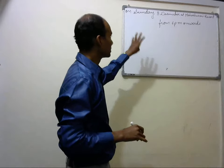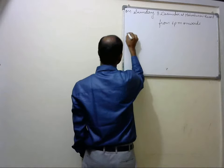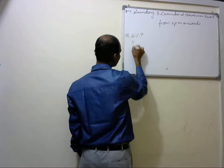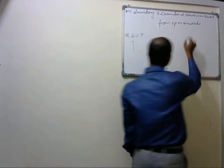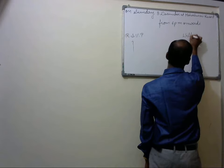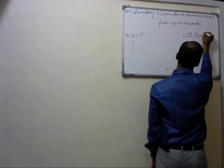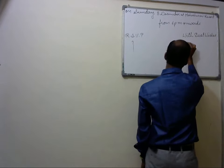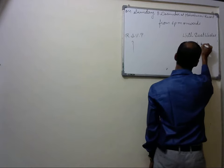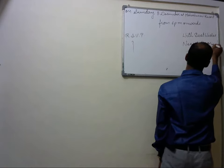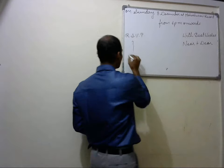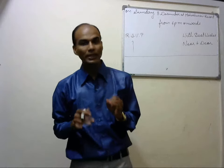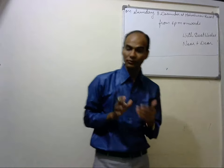So this completes the language. Now here we write RSVP, then the name and the address. And on the right side write 'with best wishes.' Below this write 'near and dear.' The whole thing must be put in a box. So by writing this, you get four out of four marks. You don't have to write all the details separately.